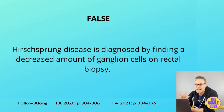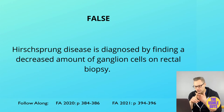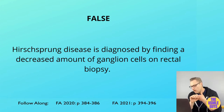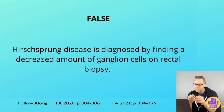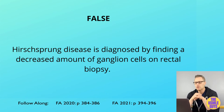Hirschsprung disease typically presents with abdominal distension, bilious vomiting, and failure to pass meconium within the first 48 hours of life, resulting in chronic constipation.